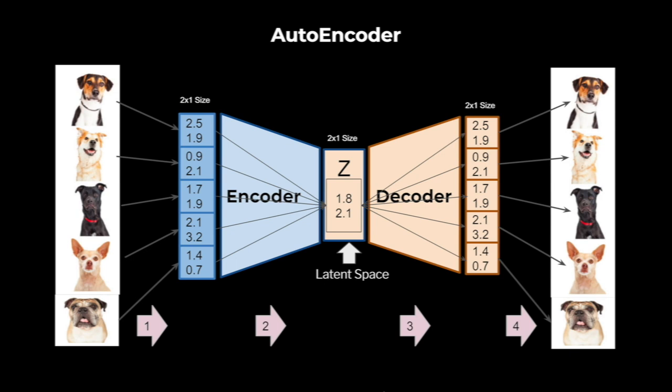So you might be wondering: what is the latent space? A latent space is also known as the latent feature space or the embedding space. It is an embedding of a set of items within a manifold in which items that resemble each other more closely are positioned closer to one another. Let's spend a few more minutes to understand latent space in much more clarity.